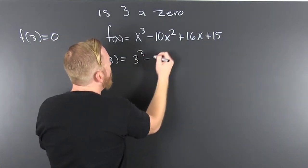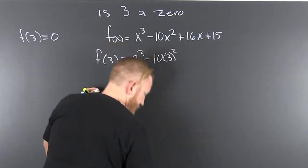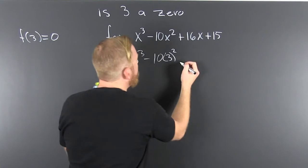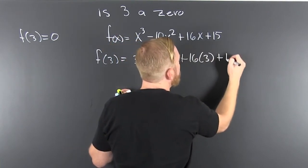So then this is 3 to the 3rd minus 10 times 3 squared plus 16 times 3 plus 15.